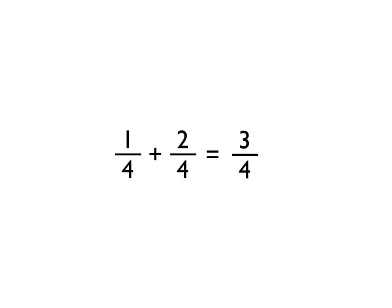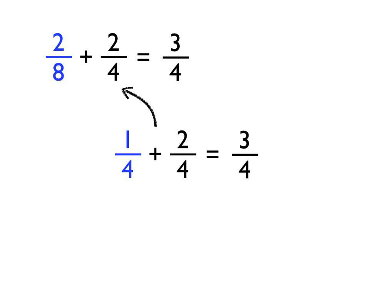I'm going to start with a fraction sum where the denominators are the same: 1 quarter and 2 quarters is 3 quarters. What I've done in the top left example is changed that 1 quarter into an equivalent fraction, 2 eighths. Now 1 quarter and 2 eighths are equivalent fractions describing exactly the same size number. So if 1 quarter and 2 quarters is 3 quarters, then 2 eighths add 2 quarters must also equal 3 quarters, because 1 quarter and 2 eighths are equivalent fractions.